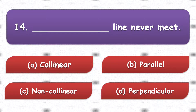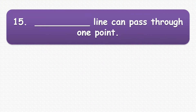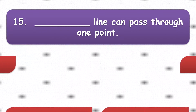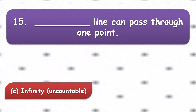Next question: blank lines never meet. The options are collinear, parallel, non-collinear, or perpendicular. The answer is parallel. The last question: how many lines can pass through one point? The options are one, four, infinity, or two. The correct answer is infinity, or you can say uncountable.